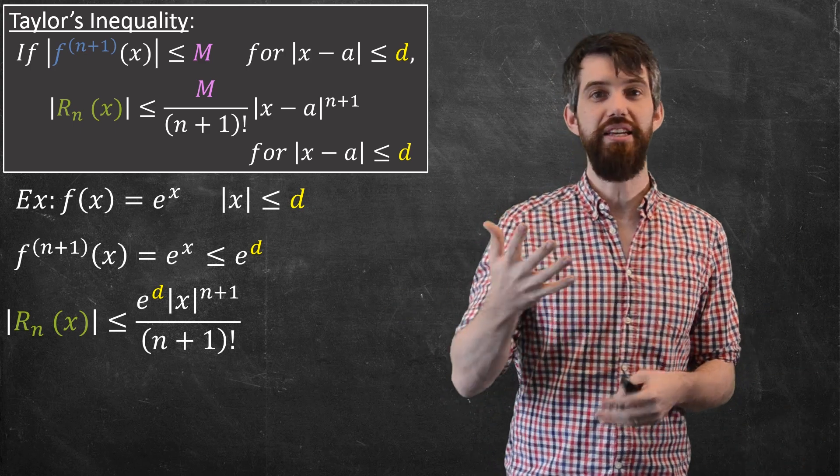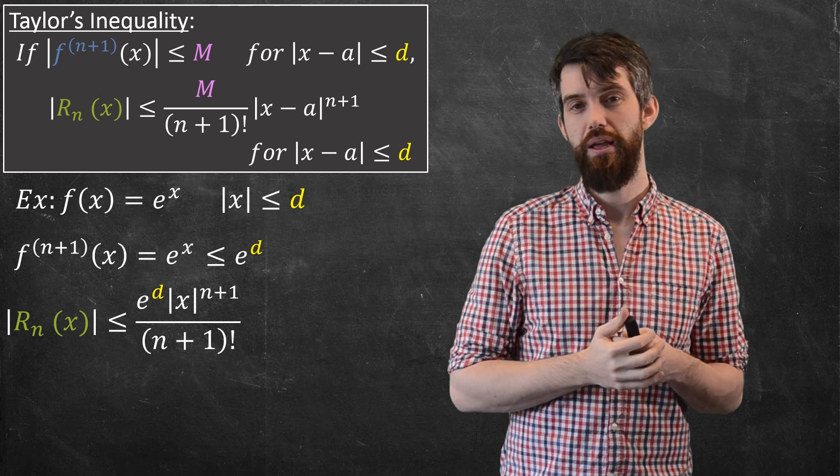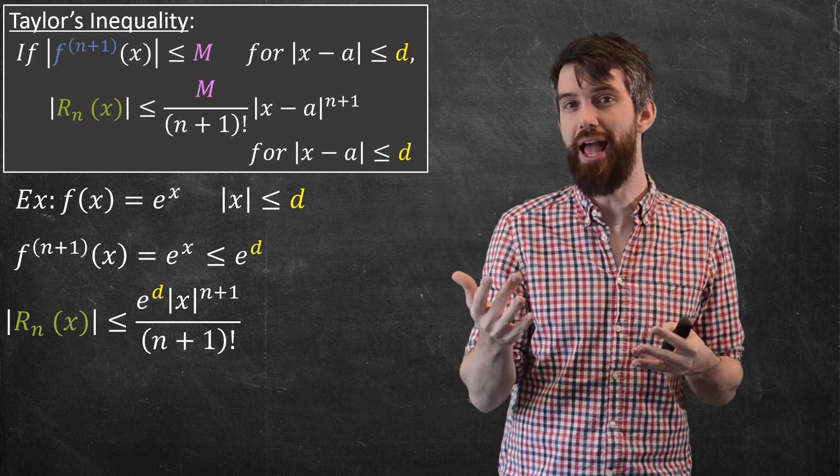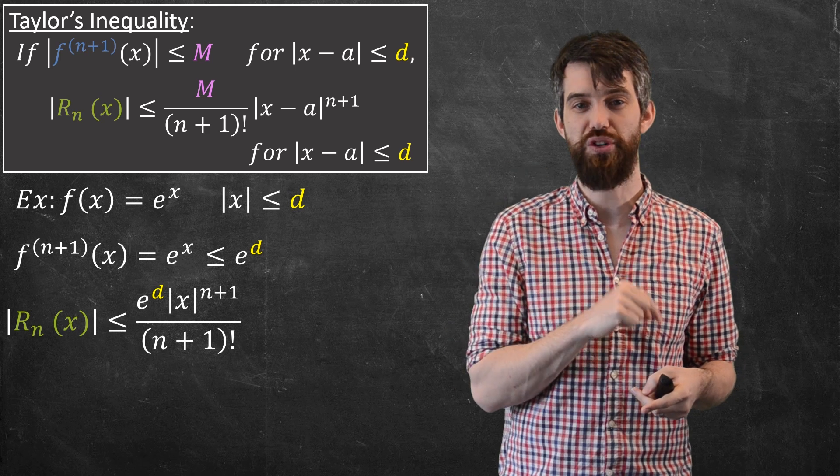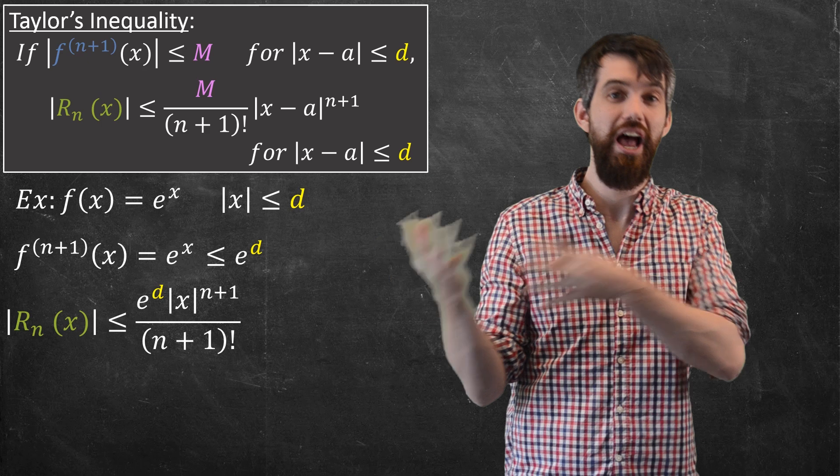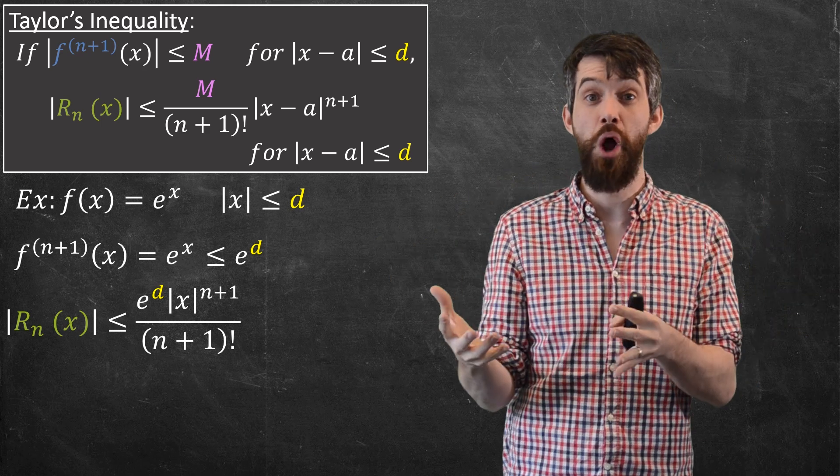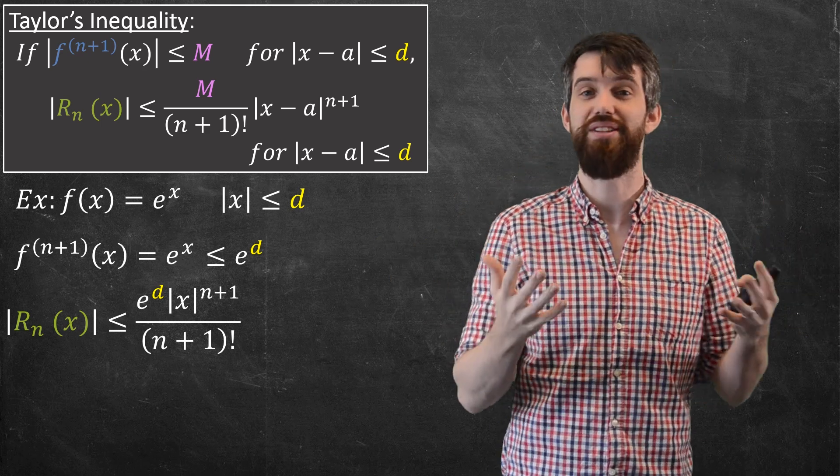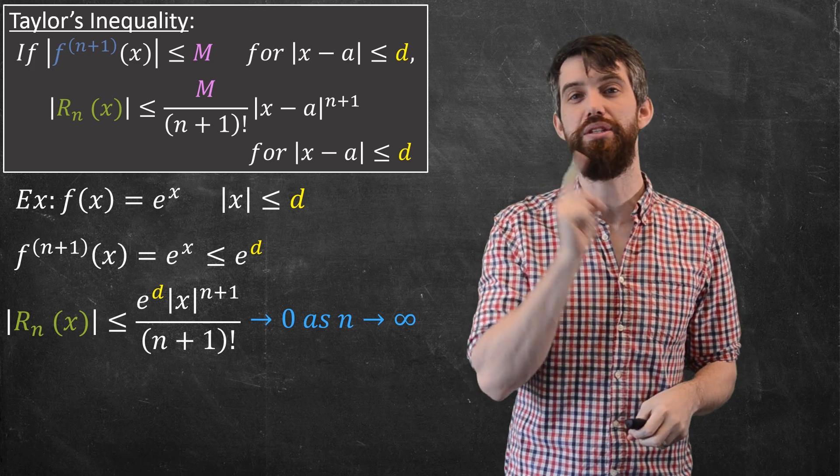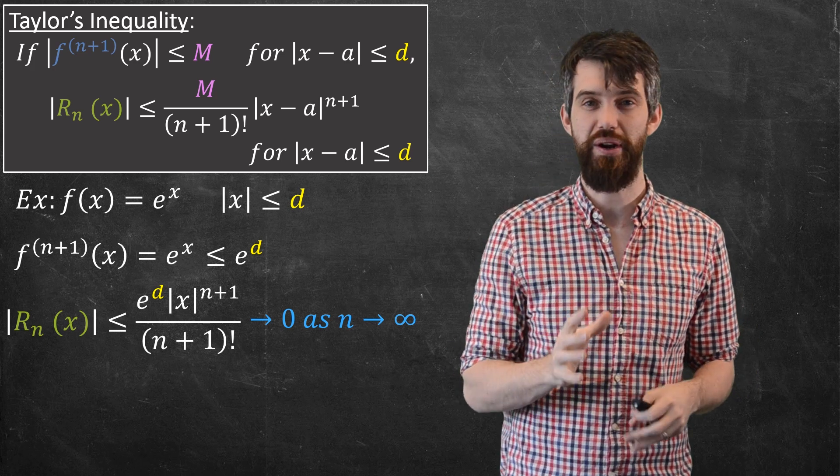Now, what happens to this remainder as my n gets large if I take more and more terms? Well, e^d is just some number. It doesn't matter. In the numerator, you have a polynomial x to the power of (n+1). That would be a bigger polynomial, but it's a polynomial. And in the denominator, you have a factorial. And one of the things we know of our sort of hierarchy of functions is factorials are going to dominate polynomials and certainly dominate a constant like e^d. So as n gets large, this entire remainder is going to 0 as n goes to infinity.